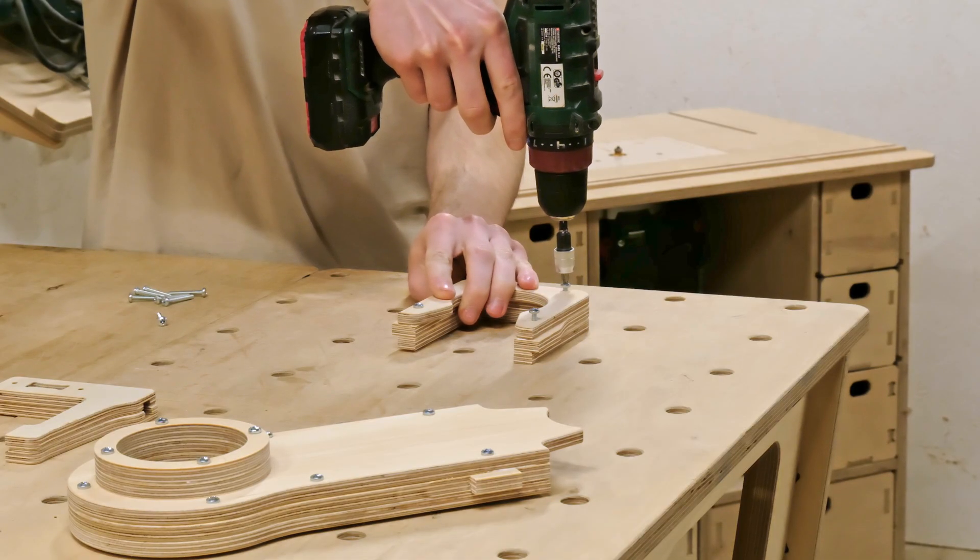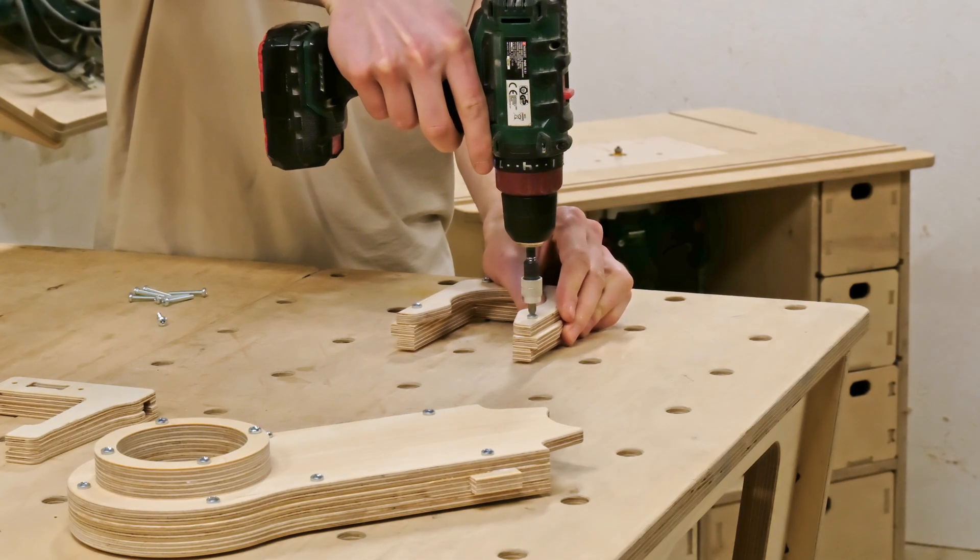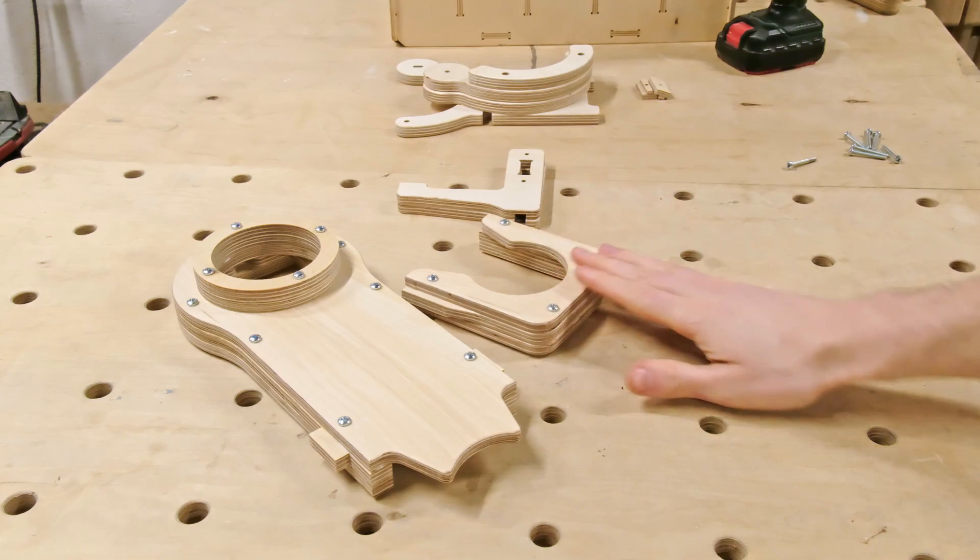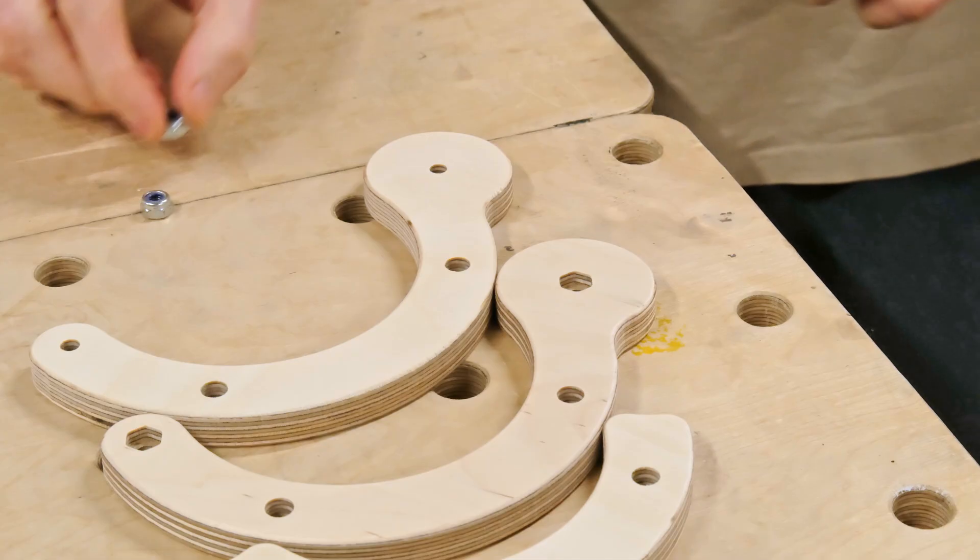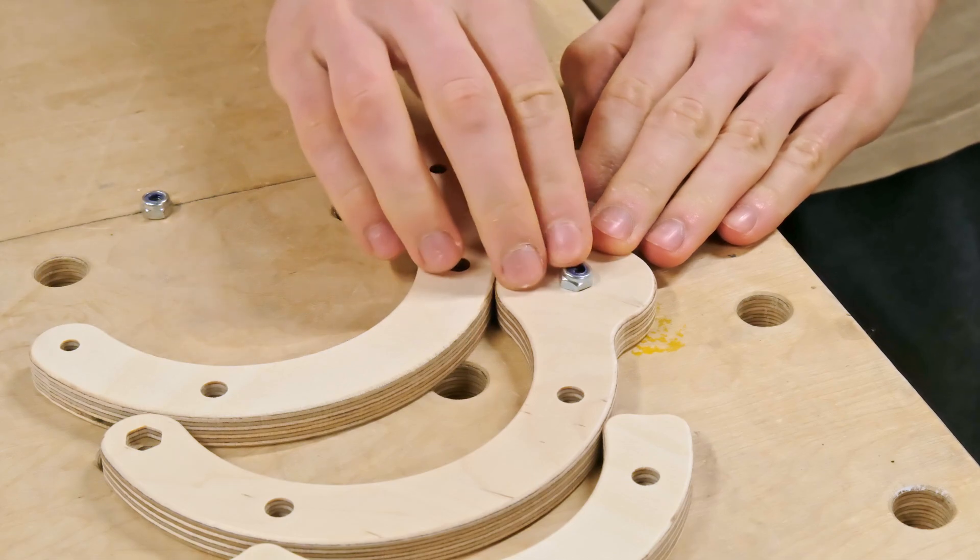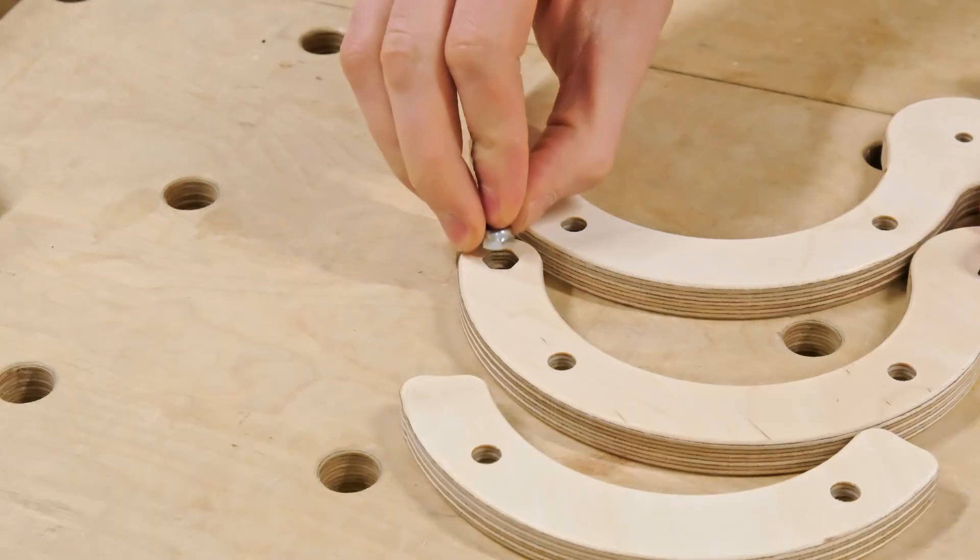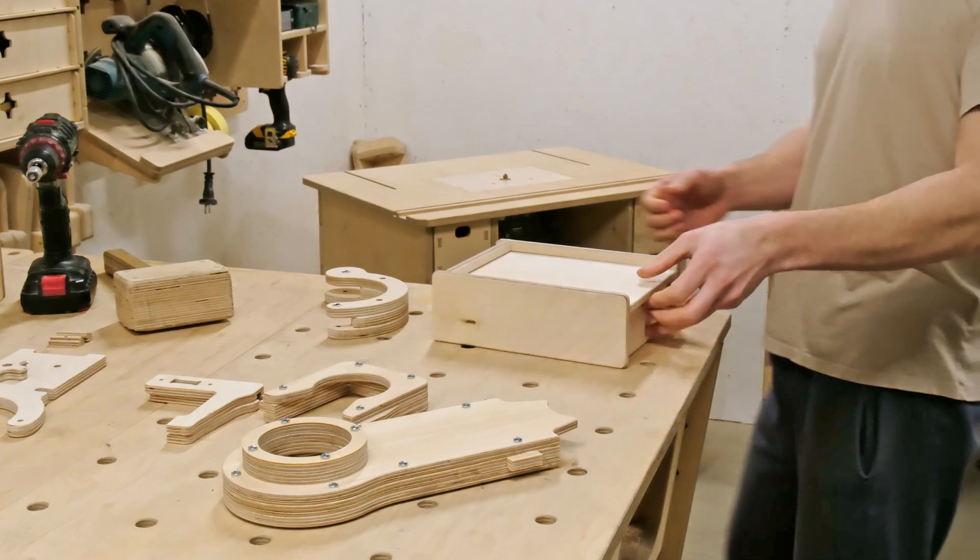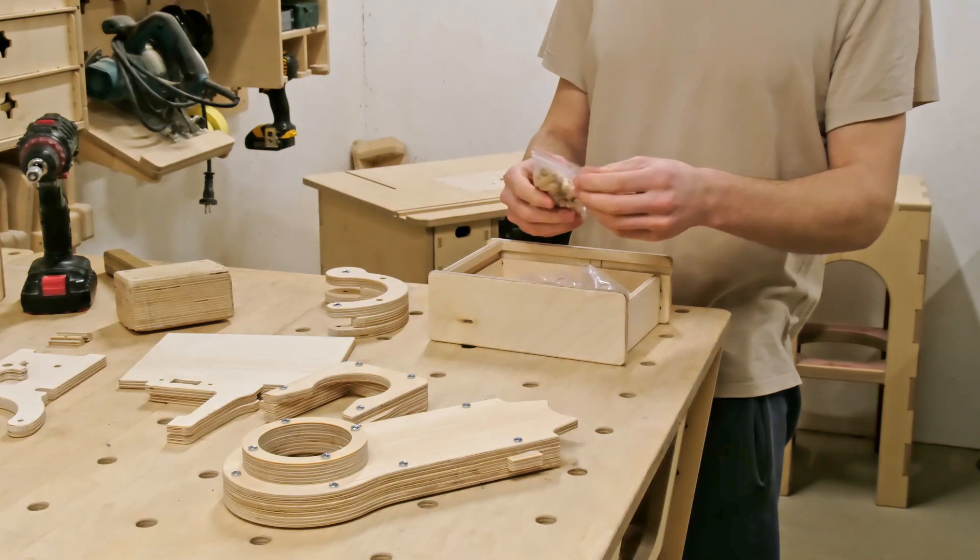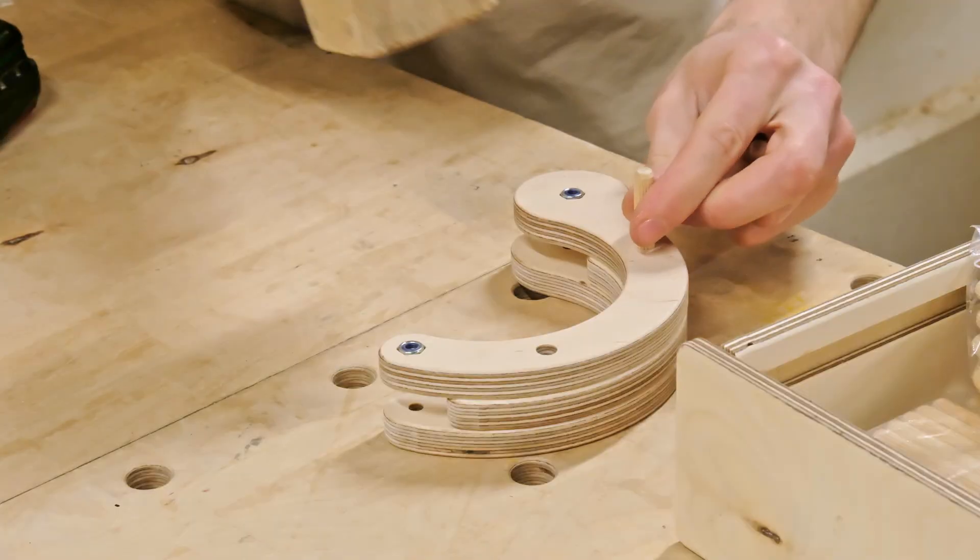While we have the glue on the workbench, we can also secure the dust tube mounting arm components together. But before we do that, I'm adding M6 lock nuts into the joinery pockets to one of the holder's components. This time, to ensure all the parts are aligning properly, we are using wooden dowels, which need to be hammered into position.